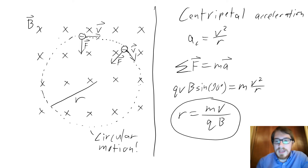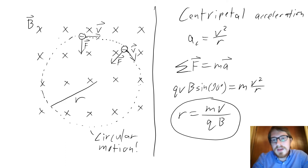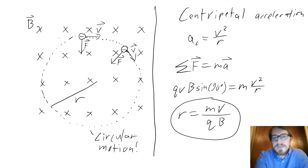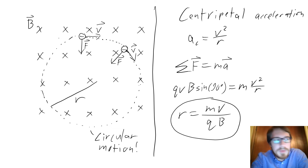We can work out the radius of that circle by applying Newton's second law. Circular motion is associated with a centripetal acceleration of v squared over r. The only force acting on this charge is the magnetic force, QVB sin(θ), where theta is 90 degrees since the charge moves perpendicular to the magnetic field. Setting this equal to mv²/r and rearranging, the radius r = mv / (qB).